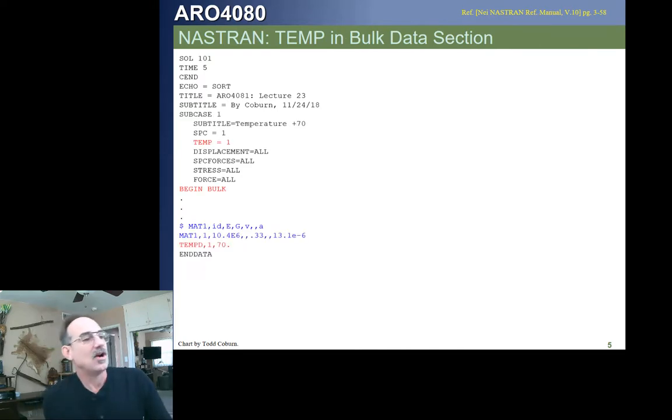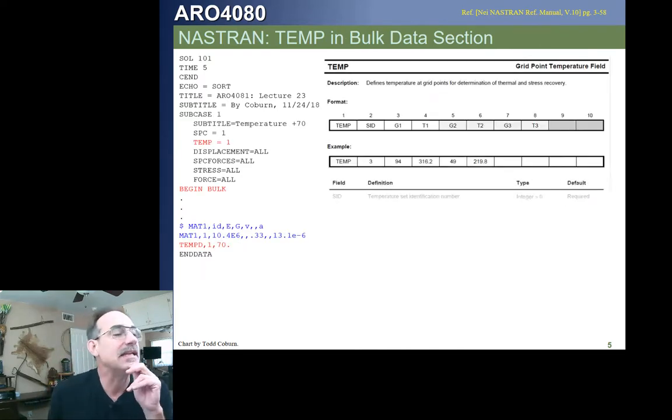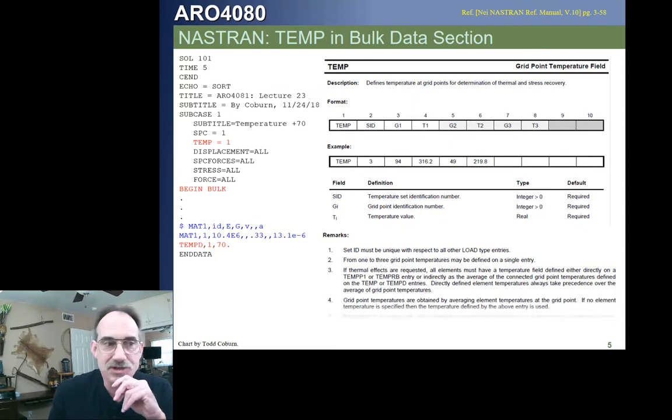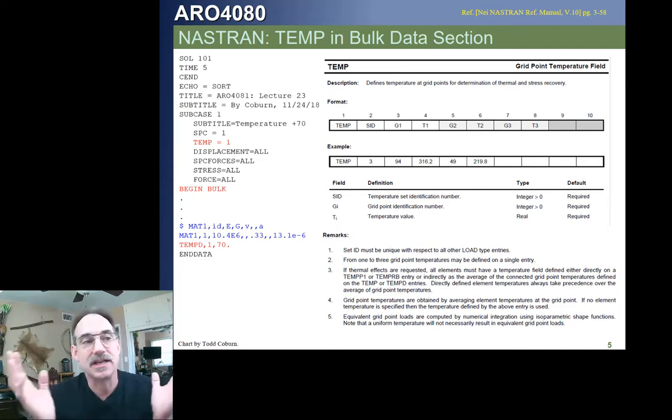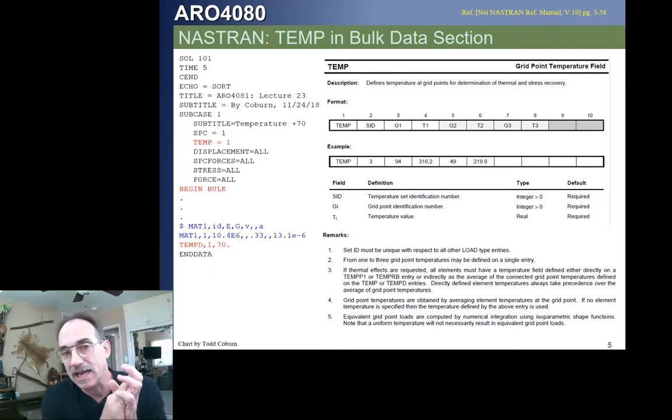So, our next card is taking a look at one way to impose temperatures, using the temperature card. What the temperature card does is allow us, you'll have temperature, Set ID will be the ID, once again, that has to tie back to the case control. And then it allows us to call out different temperatures at different grid points. For example, if you have a structure with a temperature distribution, and you want to look at what is the steady state response, or once all those temperatures have already been imposed on the model.